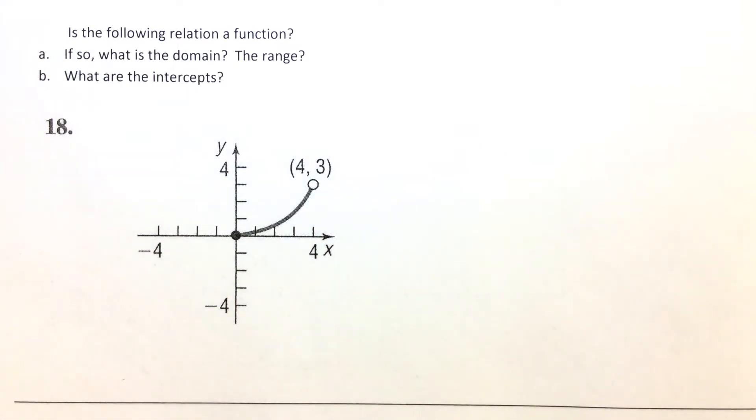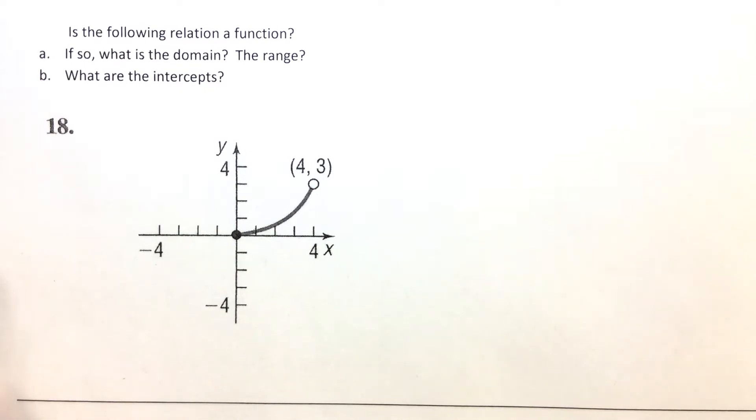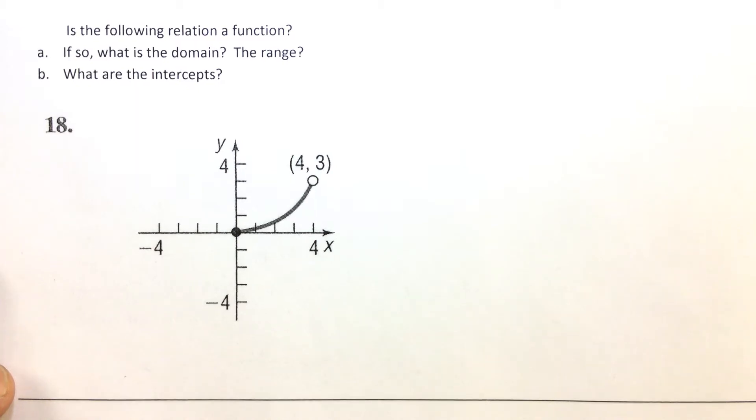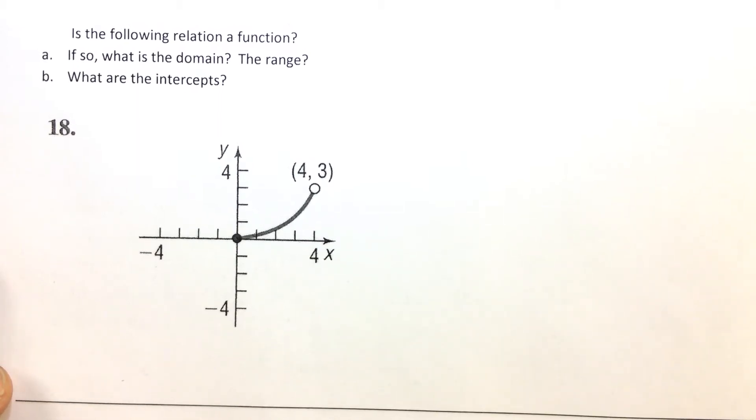For problem 18, we're being asked if the relation is a function. We should remember from algebra 1 that if you can draw a vertical line through a graph at most one point, then the relation or graph is of a function.